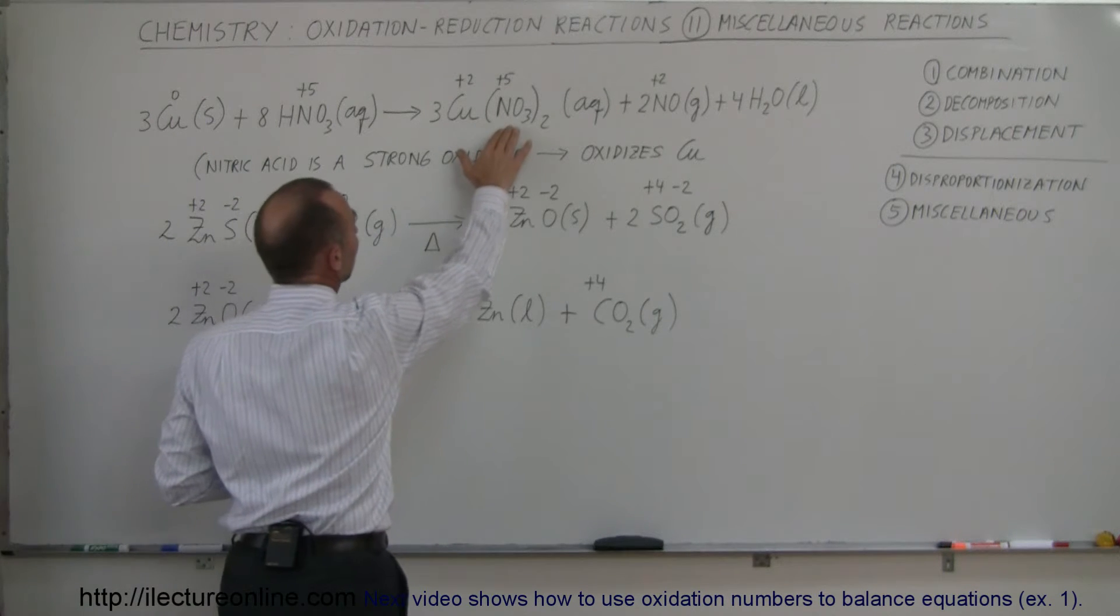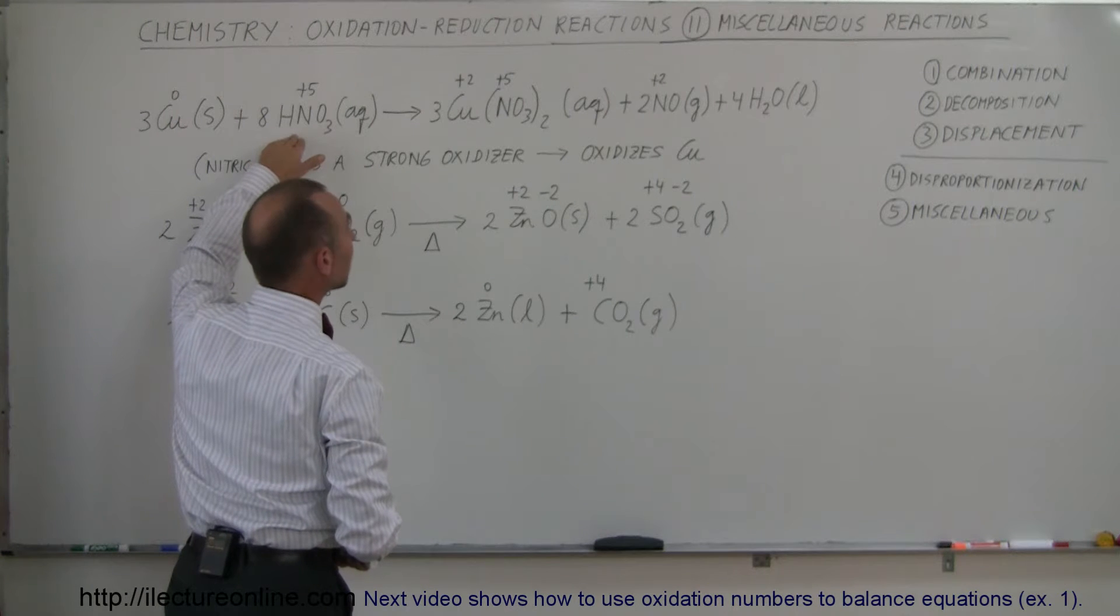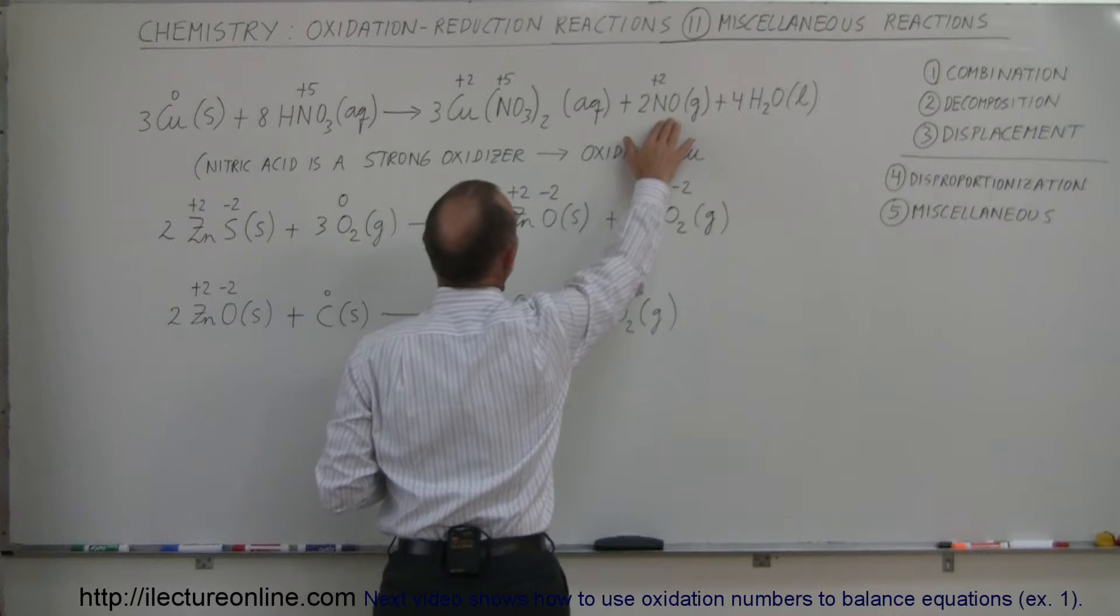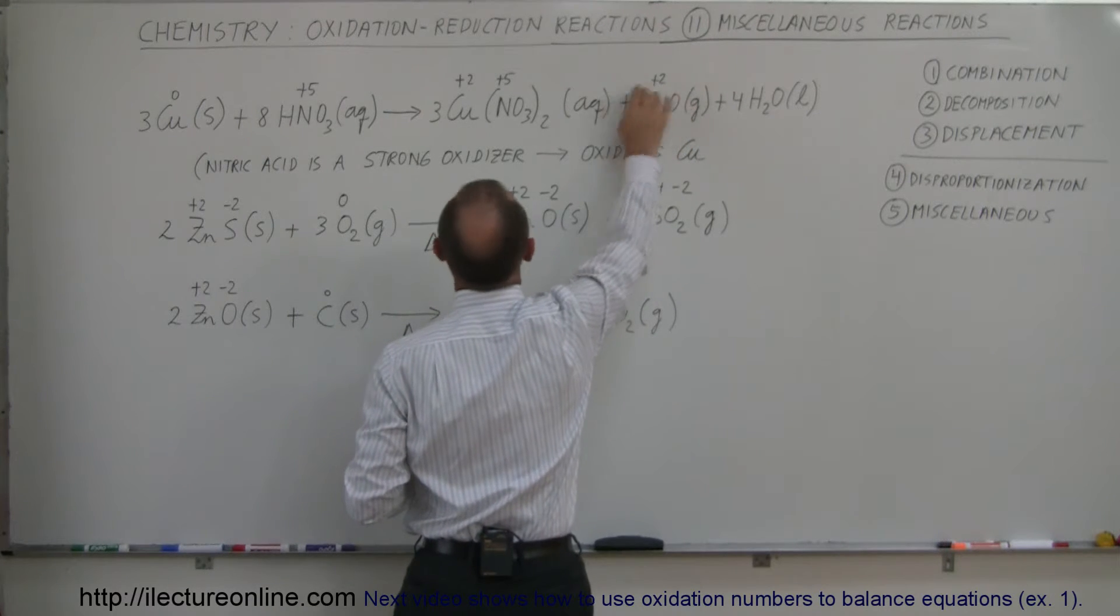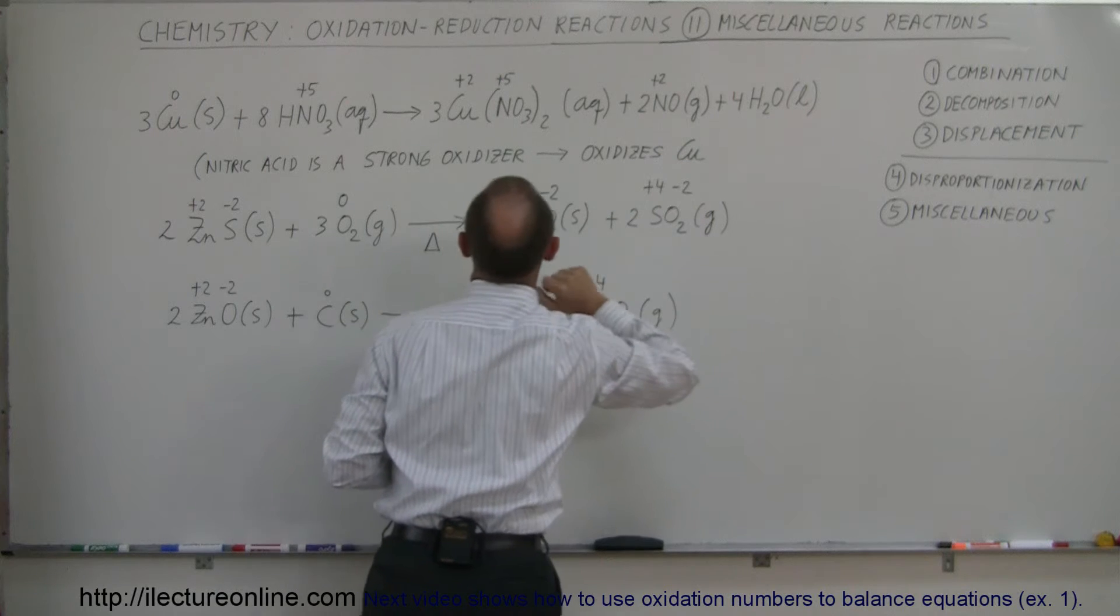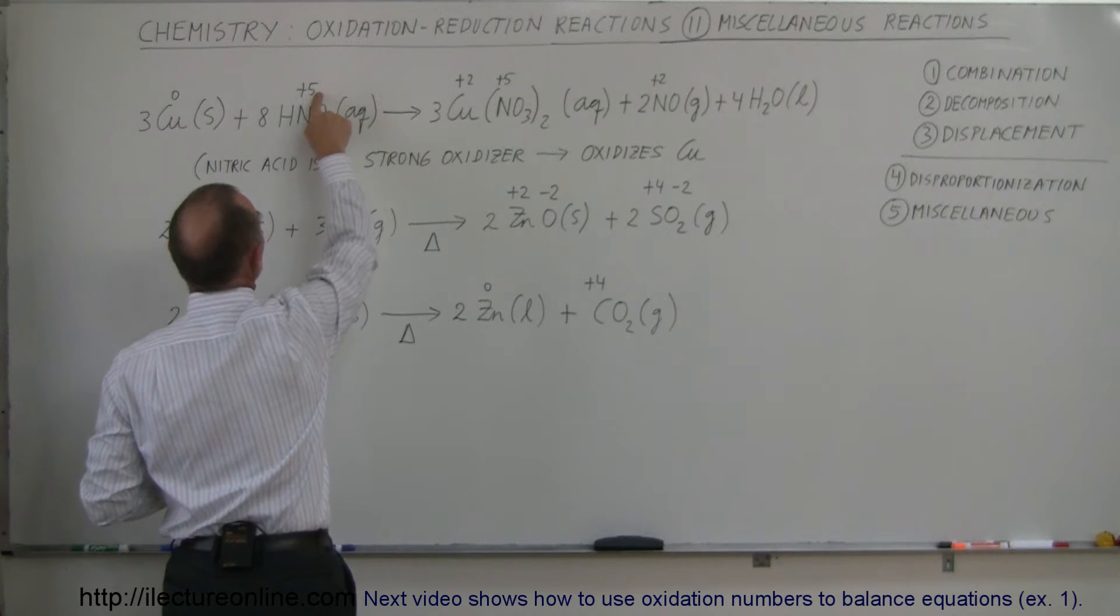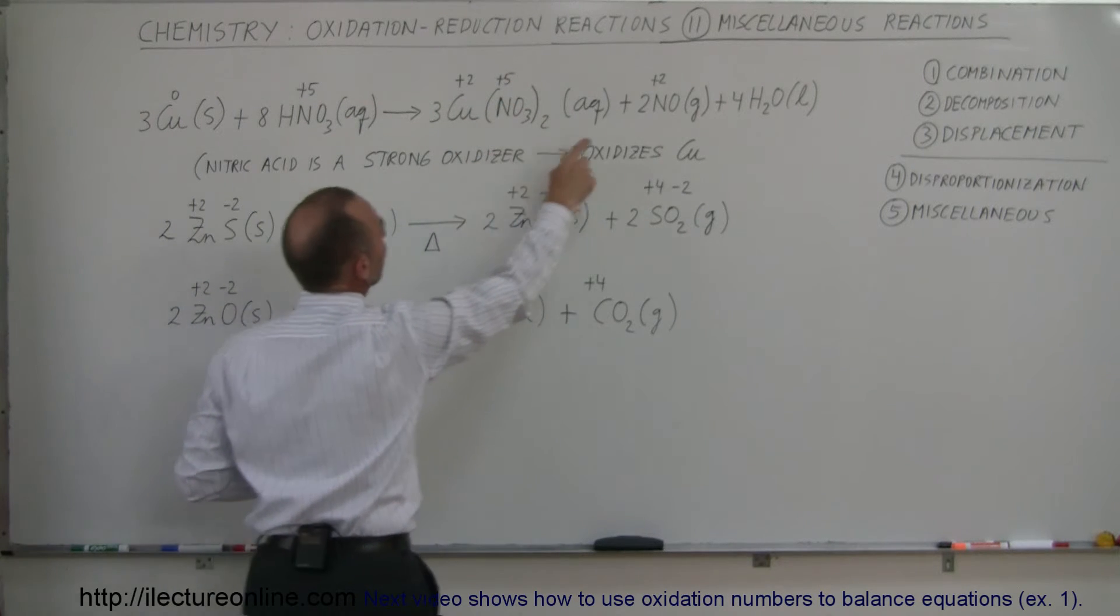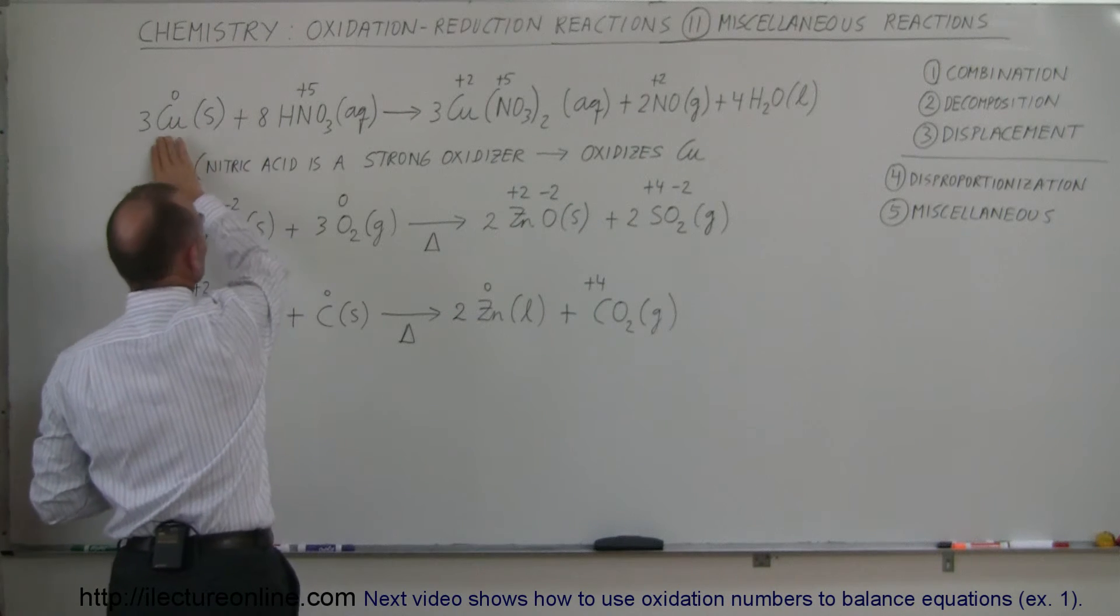We then mix it with NO3. Notice from that we also have nitric oxide gas, which is a plus two oxidation state, and we produce some water as well. For nitrogen, we have an oxidation state here of plus five. It stays at plus five with copper nitrate, and here it goes to an oxidation state of plus two. The copper goes from zero to two.